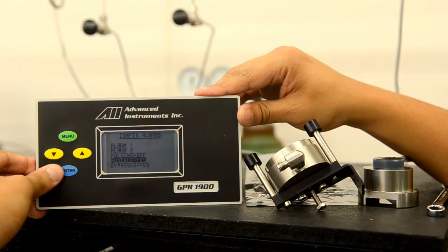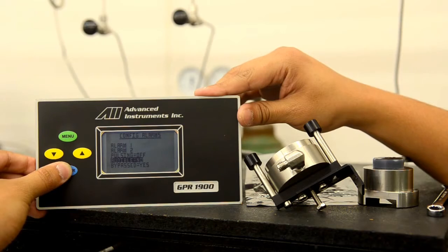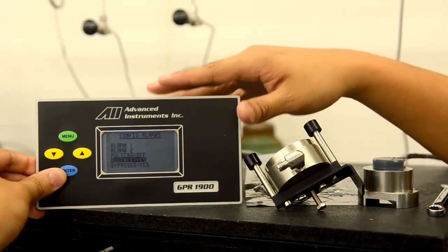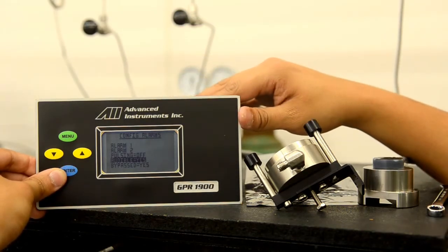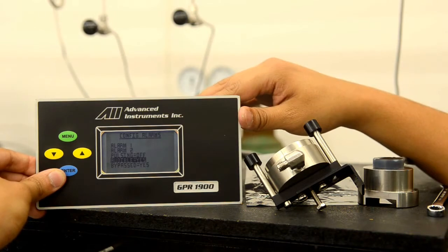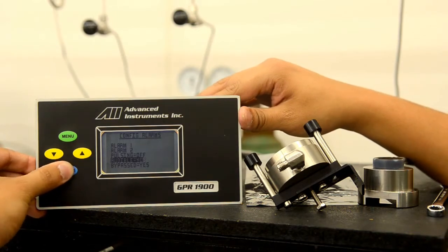We have an audible option, which is currently enabled. We can disable that again by hitting the enter button. The module itself comes with an internal speaker inside of it that will sound off when the alarm condition is met.